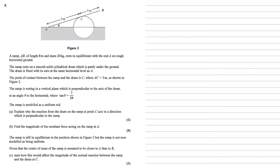The ramp is resting in a vertical plane which is perpendicular to the axis of the drum, at an angle theta to the horizontal where tan theta equals 7 over 24. The ramp is modeled as a uniform rod.